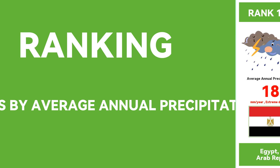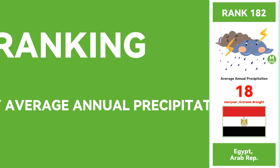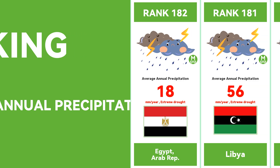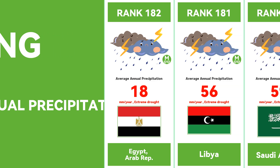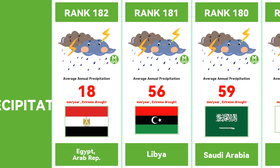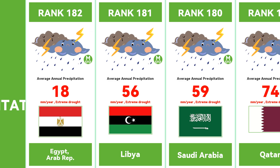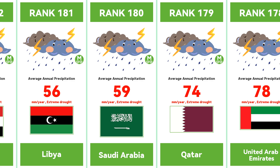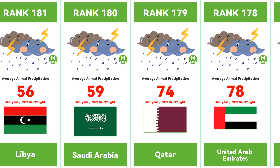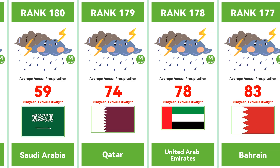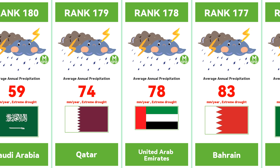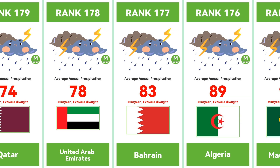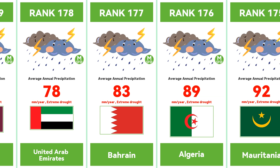In this video, Mini Dance Data will present the ranking index of countries by average annual precipitation. Rainfall is an indispensable weather phenomenon on our vast earth. The rainfall varies greatly in different regions, from arid deserts to humid tropical rainforests, and each country is affected to varying degrees by rainfall.